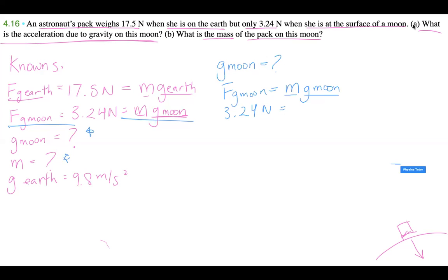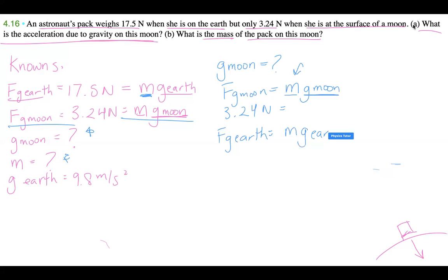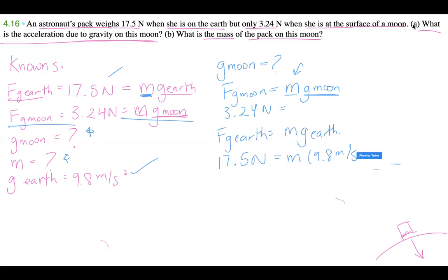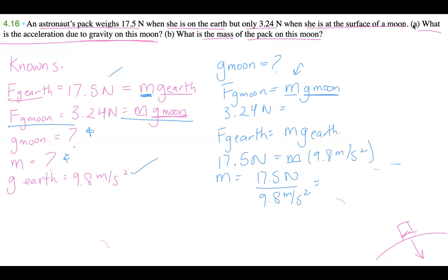To get mass, we use fg_earth equals mass times g_earth. Plugging in: 17.5 newtons equals mass times 9.8 meters per second squared. Isolating for mass, we get 1.7857 kilograms.